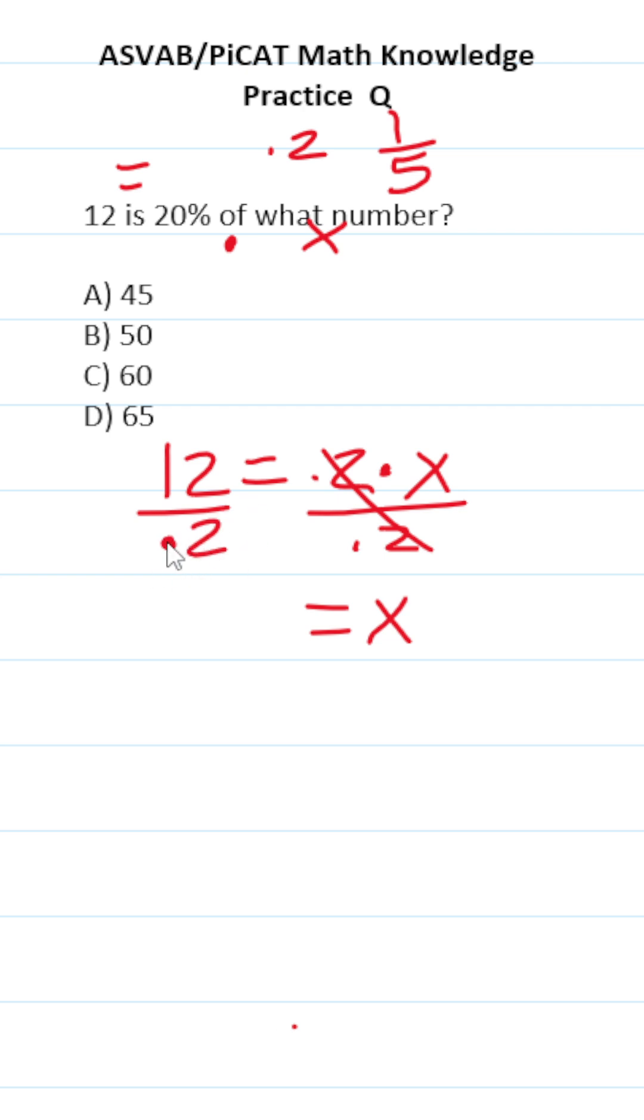Well, in order to do this division, just move this decimal one time to the right, and you move this decimal in 12 one time to the right, add a zero placeholder. So this becomes 120 divided by 2.